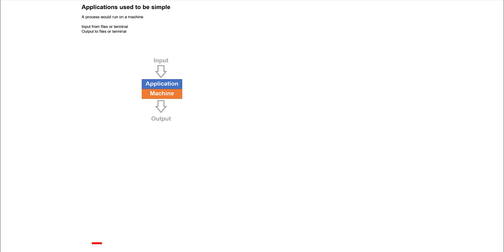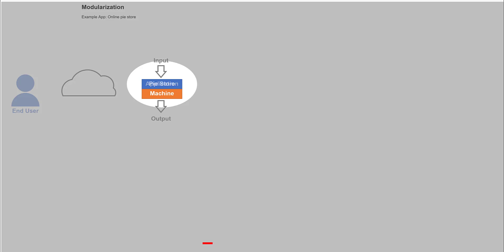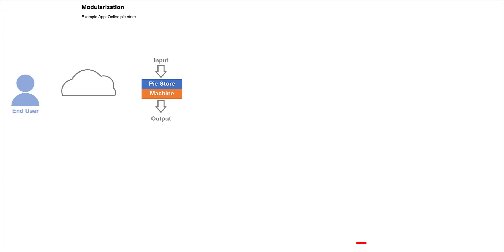It took input from files or the keyboard, and sent results to the screen or output files. A user might sit directly at the terminal, or log in over a network. We've simplified this early environment, of course, but it is a good baseline. We now move forward several decades to modularized applications. For example, let's say we have an online store selling pies and baked goods, and we'll hide the input and output into a more generic category of communication among modules.